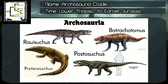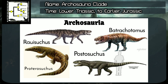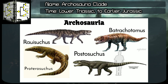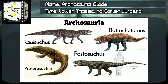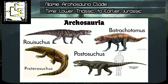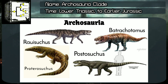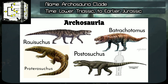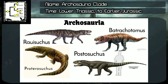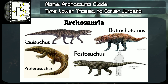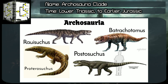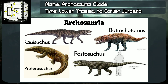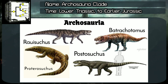The archosaurs, also known as the ruling reptiles, is a clade of diapsids that gave rise to the modern birds and crocodilians. They also gave rise to the extinct pterosaurs and to the so beloved dinosaurs. Important notice: archosaurs are not dinosaurs, but they are their ancestors.